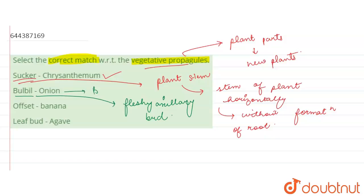Then it says offset and banana. Offset is what? Offset is the asexual reproduction of a plant in which the roots are formed, it has leaves and stems, and if we remove this offset and plant it elsewhere, then a whole new plant can grow from it. So offset is not present in banana. That again, this is a wrong pair. Offset can be found in water hyacinth, so that pair is wrong.